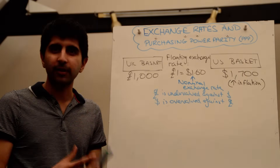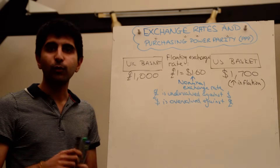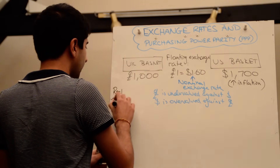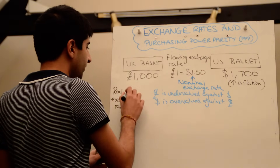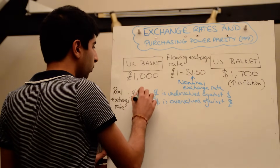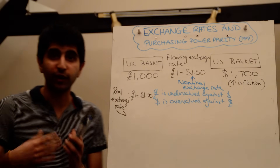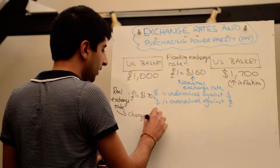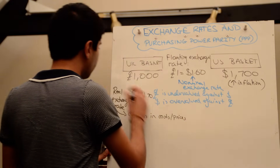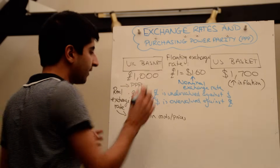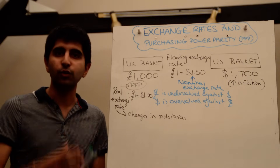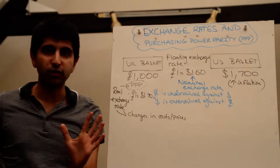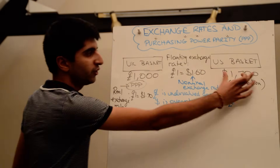That's the problem with nominal exchange rates — they don't always reflect purchasing power. Therefore, economists would rather use the real exchange rate when measuring purchasing power. The real exchange rate between the two currencies should be £1 equals $1.70. The real exchange rate is more useful for economists because it takes into account changes in costs and prices, and tells you what the purchasing power parity is between two currencies.